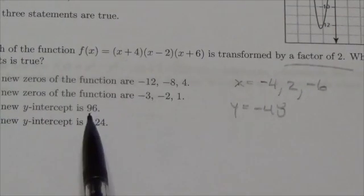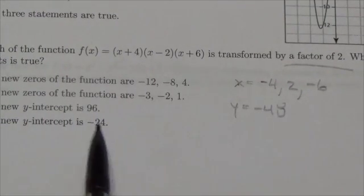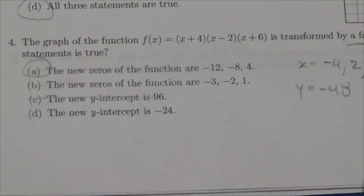The new y-intercept is 96. Now, 48 times 2 is 96, but not negative 48. So although that's close, that's not it.